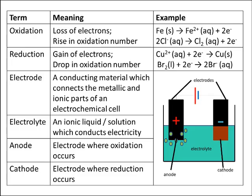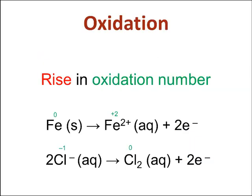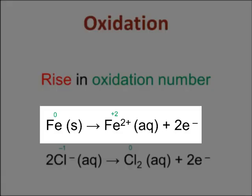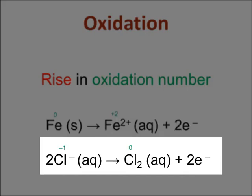Terms that you need to know: Oxidation, the loss of electrons, rise in oxidation number. And here are some examples. We see that iron's oxidation number changes from zero to plus two. It's risen. Chloride's oxidation number changed from minus one up to zero.